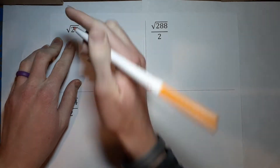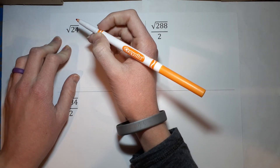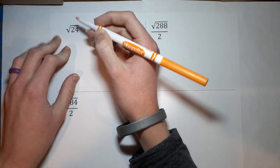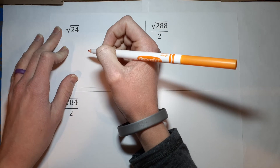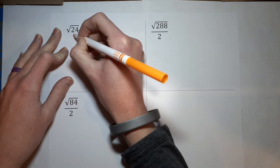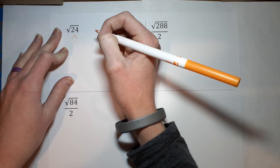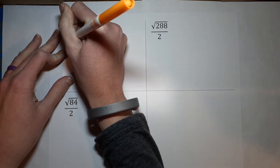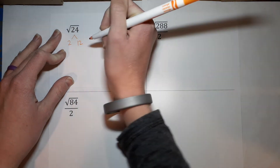It's called prime factorization, but that sounds scary. This is what we do: we're going to break down this 24. I'm going to find two numbers that multiply to 24. So 2 times 12 equals 24.